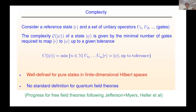More formally, we consider a reference state R and a set of unitary operators U1, U2, and so on — a finite amount — referred to as gates. The complexity, which depends on a particular state Psi, is then the minimal number of these gates required to map the reference state to the final state Psi. This is usually defined up to a given tolerance, as shown in the equation: you minimize the expression in curly brackets up to a tolerance.